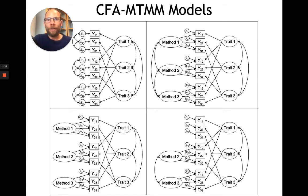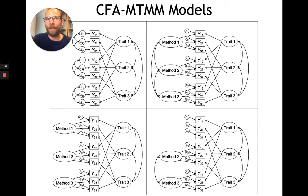Nowadays, we often use confirmatory factor analysis for analyzing MTMM data rather than looking at an MTMM correlation matrix. The reason is that the MTMM correlation matrix has a number of limitations: we do not account for measurement error when looking at an observed correlation matrix, and a comparison of correlations can be difficult because they can be attenuated by measurement error. Also, some correlations might be attenuated more than others, and an MTMM matrix does not allow us to express trait and method effects by latent variables so that we could relate them to other variables.